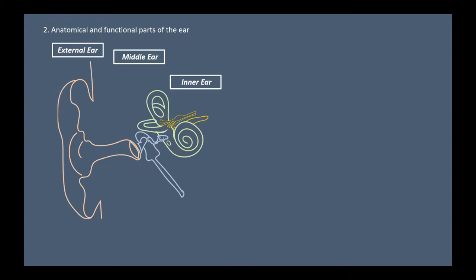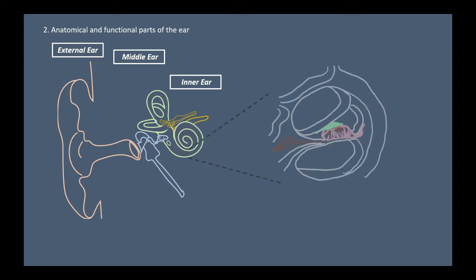The middle ear transmits airborne sounds to cochlea by vibration of three bones, which are malleus, incus, and stapes. The inner ear, which is cochlea, transduces the mechanical information to the electrical signal. Cochlea has three liquid-filled compartments called scala vestibuli, scala tympani, and scala media.